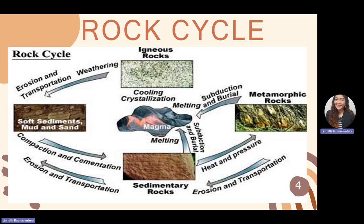Metamorphic rocks can also be buried through subduction, and their only fate then is to become magma through the process of melting. Igneous rocks buried beneath the surface can also become magma. That is the rock cycle — it shows how earth's materials are recycled through processes such as erosion, transportation, weathering, cooling and crystallization, subduction and burial, heat and pressure, and compaction and cementation.